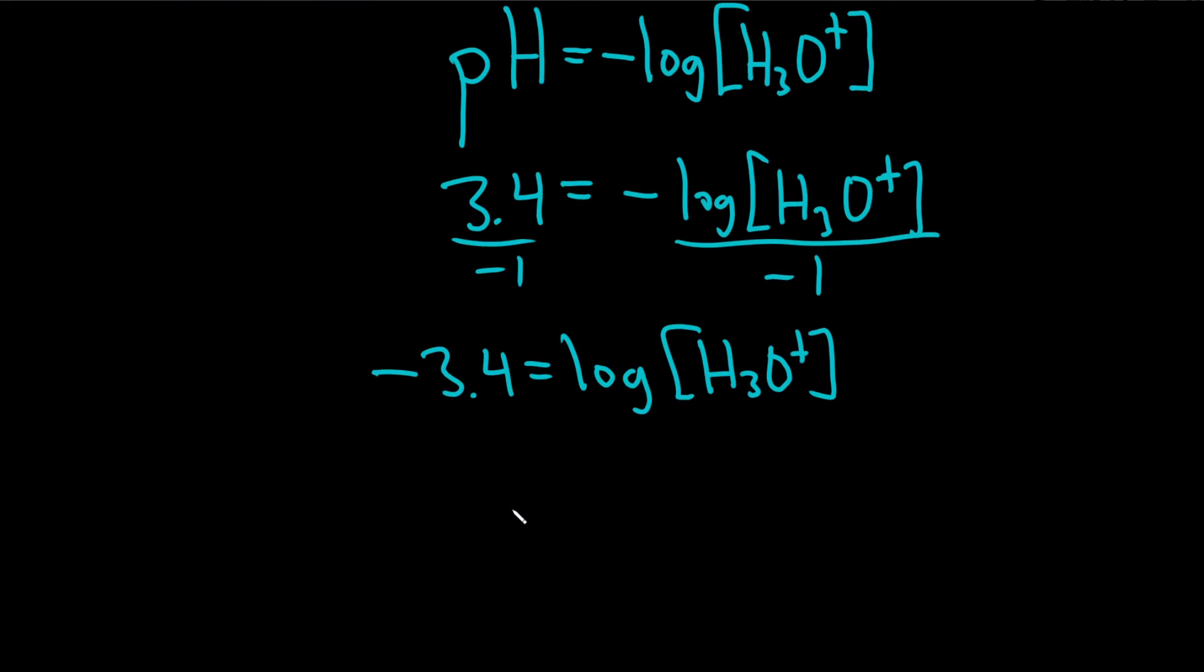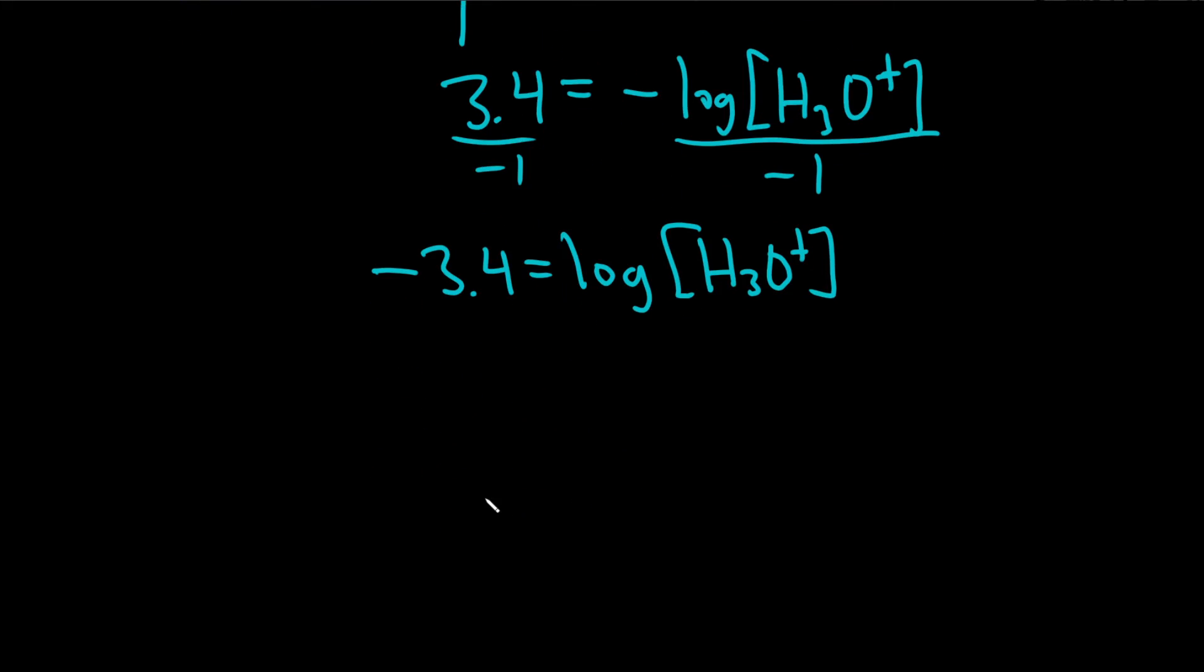And then to get rid of the log, what you do is you exponentiate. You see, this is actually log base 10. It's invisible because when people write log, they mean base 10. If they don't put a base, it's 10. It's implied. You put one here and you put one here. This goes away.